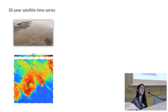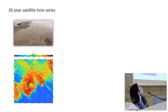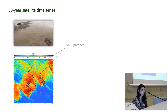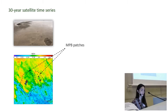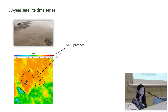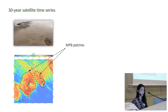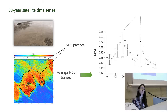What we did is we created a time series of 30 years, combining Landsat and SPOT data, which allowed us to analyze the dynamics of MPB biofilms around these two reefs you can see in the picture — reefs colonized by Crassostrea gigas. So we drew a virtual transect crossing the two reefs and extracted the NDVI values on the whole time series.